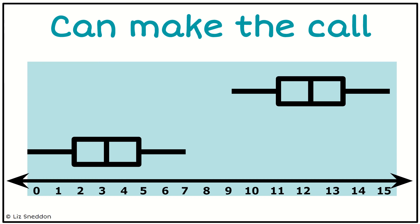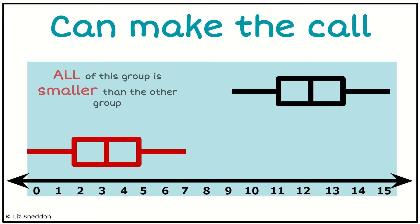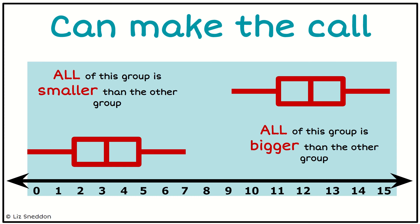Let's look at a couple of situations. I can make the call if I can see that all of this bottom group is smaller than the other group, and equally all of the top group is bigger than the other group. So because all of one group is bigger than all of the other group, I can confidently say yes, this group does tend to be bigger than the other group.